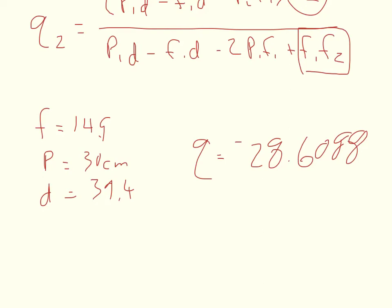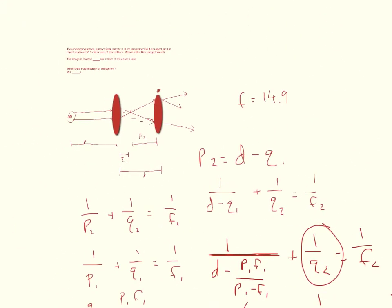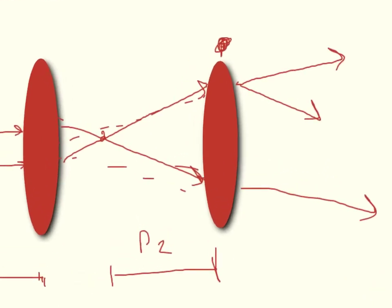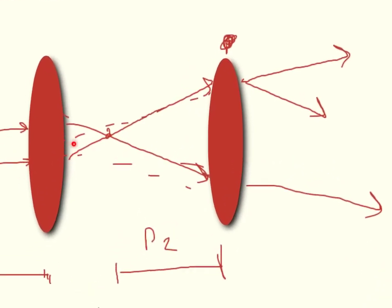What does that mean? That means the image appears to form about 28 cm before the second lens — if you trace the lines backwards, that's where they appear to cross. This is still a converging lens because the line would have gone out straight, but it converged it down a little. It just didn't converge enough to make the lines cross in front.